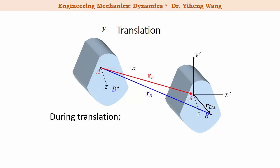During translation, this relative position remains the same, its time derivative is zero, which means that the position of point B is always the same relative to point A. And the relative velocity of point B is also zero, the relative acceleration of point B is also zero. This means that for any two arbitrary points on the rigid body undergoing translation, the two points will always have the same velocity and acceleration.